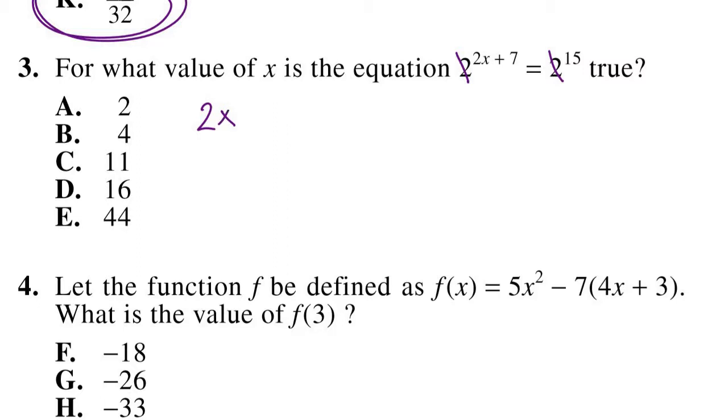So we have 2x + 7 = 15. Now this is a pretty straightforward algebra question. All we have to do now is solve for x, which we can do by subtracting both sides by 7. So we get 2x = 8, and we can divide by 2 to solve for x. And we get x = 4.